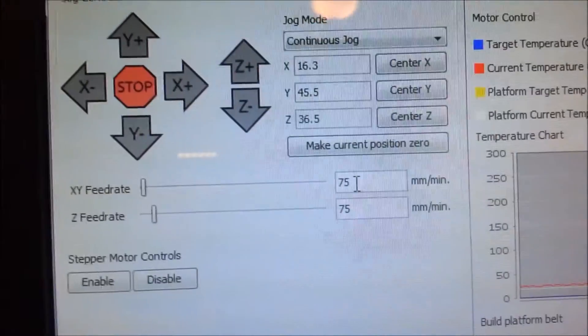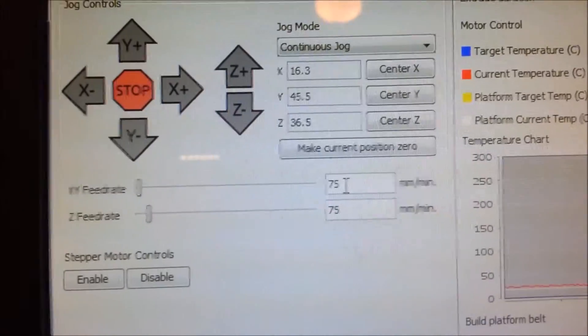We're going to be running the laser at 1.5 amps. We're just going to do a quick test here in manual mode. We have it at 75 millimeters per minute for the feed rate.